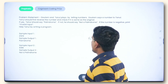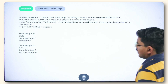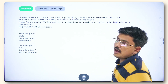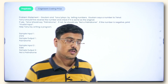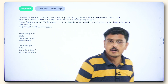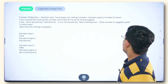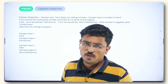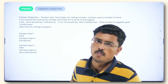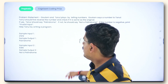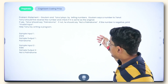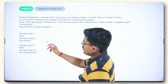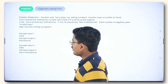The problem statement is that Gotham and Tanul play a game by telling numbers. Gotham says a number to Tanul. Tanul should first reverse the number and check if it is the same as the original. If yes, Tanul should say it is a palindrome. If not, he should say 'not a palindrome'. And if the number is negative, Tanul should say 'invalid input'.